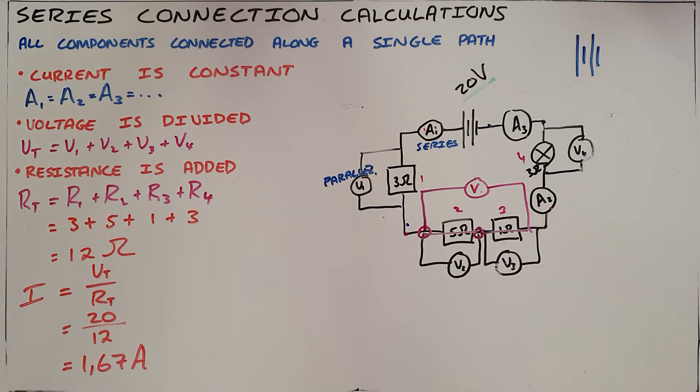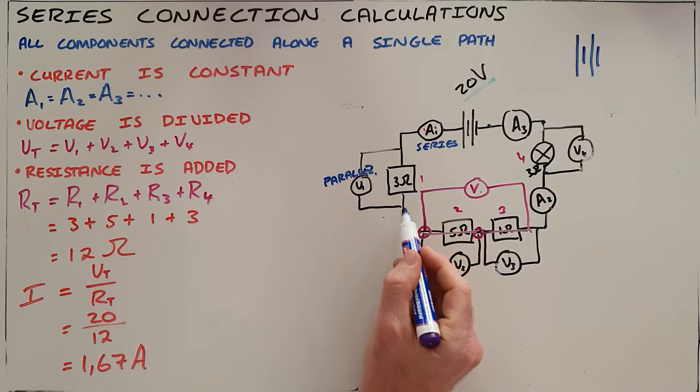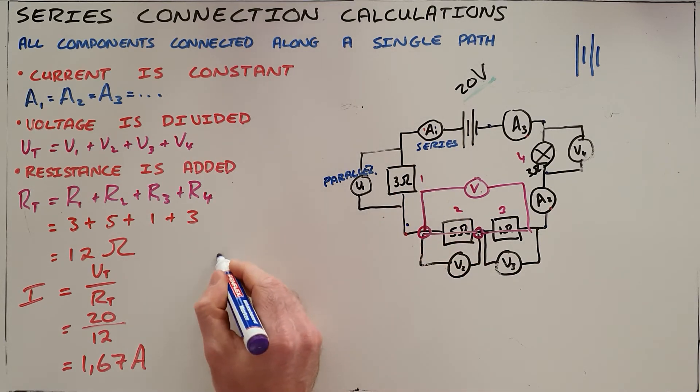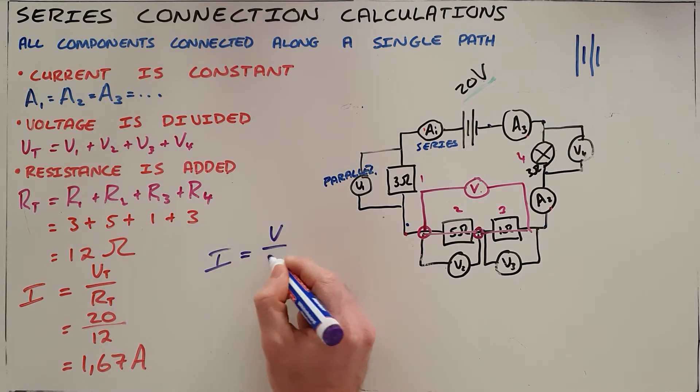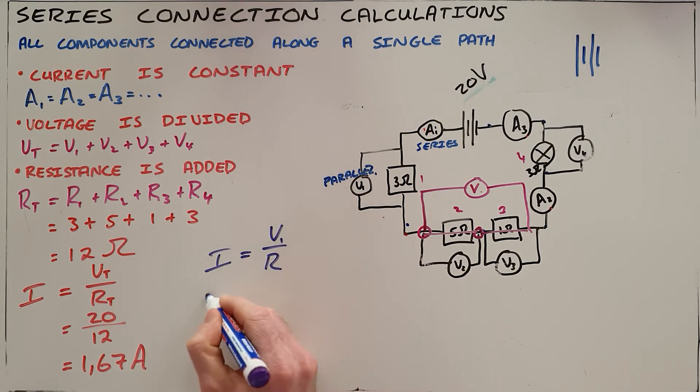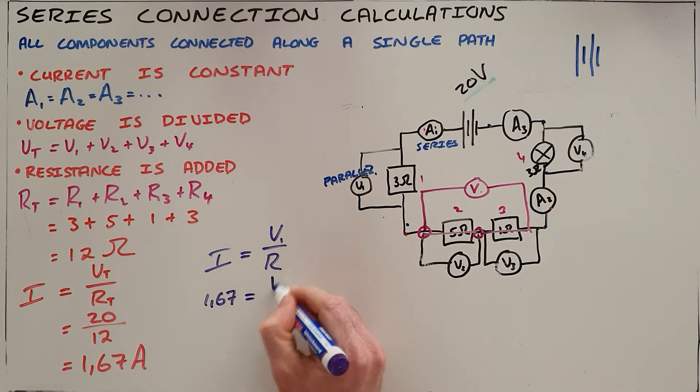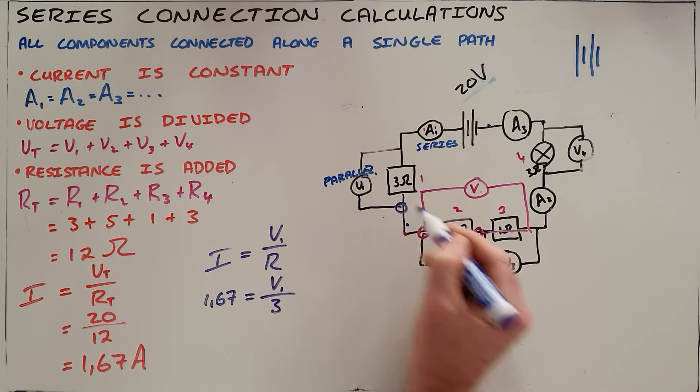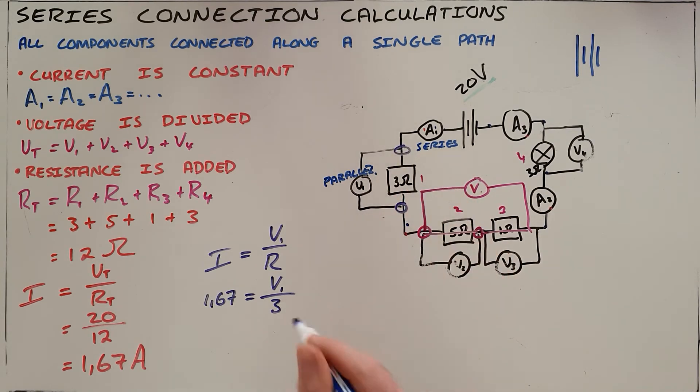The next thing that we can calculate is we can calculate the voltage over individual resistors. So this voltmeter V1, we can say, since we know what the current is that's passing through it, and we know the resistance, we can use Ohm's law once again to calculate that voltage. We can say that the current being constant in series is 1.67. Voltages are unknown. The resistance, we've told, is 3 ohms. Note here that you always take the resistance that is between the two points on that voltmeter, which means then that our reading on voltmeter V1 would be 5.01 volts.